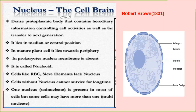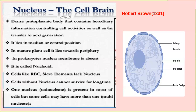Cells like mammalian RBCs and sieve tube elements in phloem tissues lack a nucleus. A cell without a nucleus cannot survive for long. Cells with one nucleus are called uninucleate; those with more than one nucleus are called multinucleate. The nucleus was discovered by Robert Brown in 1831.